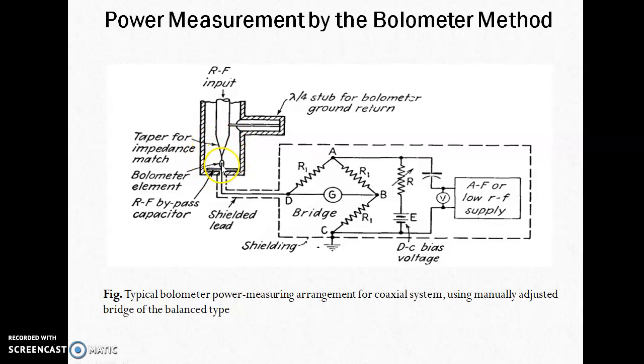The RF input comes from the coaxial cable and is tapered here to match the impedance with the bolometer element. The stub is only to complete the connection and return the signal to the ground of the circuit. Impedance matching is very important for maximum power transfer, and this is achieved by tapering the coaxial cable at this portion. There is also a bypass capacitor that isolates the DC bias circuit from the RF power.